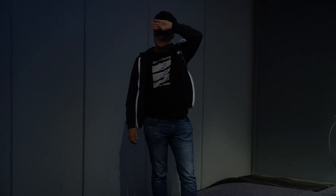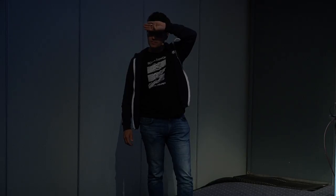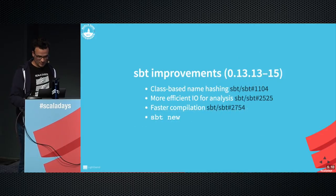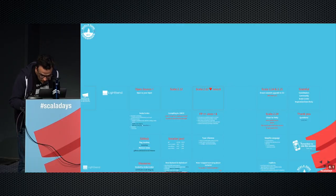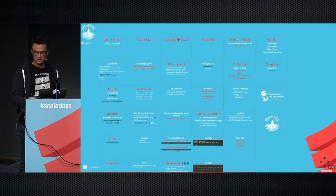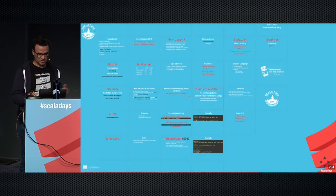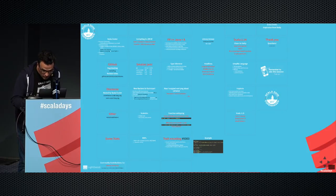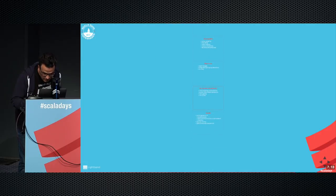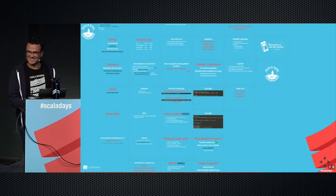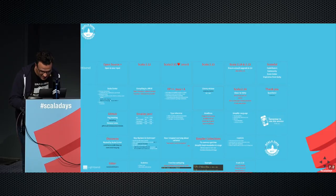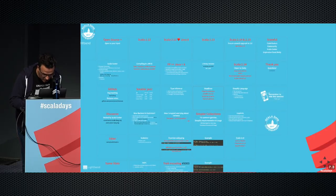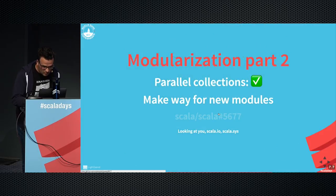Q: You mentioned spinning out further modules from the core library. Do you have some candidates to share? A: Mostly the I/O stuff is what I'd like to see replaced by something like better-files. There's some stuff that just needs to go, like scala.text. The main candidate is scala.io. Also scala.sys and scala.io are the obvious ones.